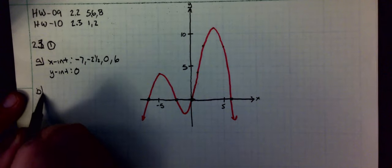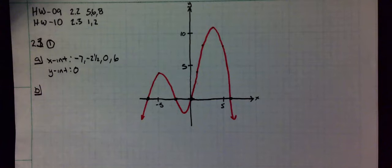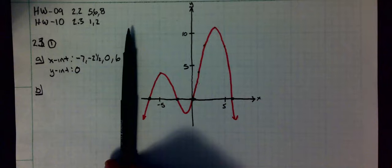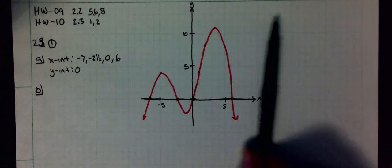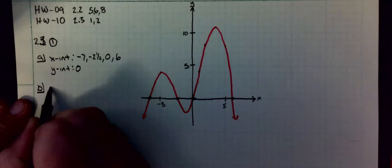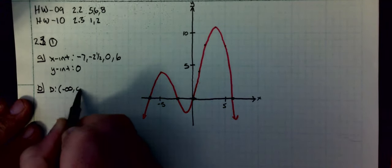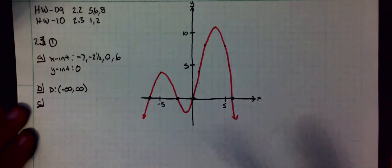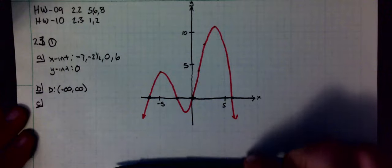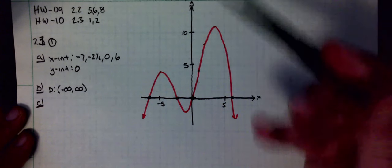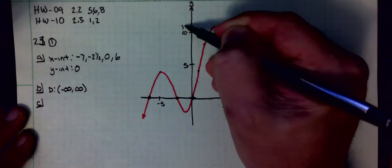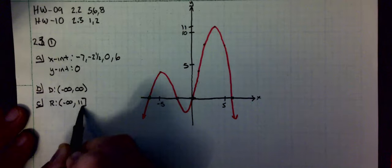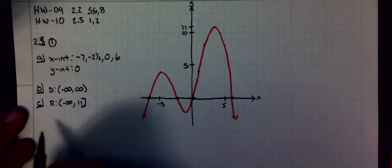Next thing it wanted is the domain of the function. We did 2.2. We start at the bottom. Actually, domain is this way. We start at the left. My x's go from negative infinity all the way up to positive infinity. Part C: range of the function. Range is my y's. Starts down at negative infinity and goes all the way up to the top here. Top is at 7.